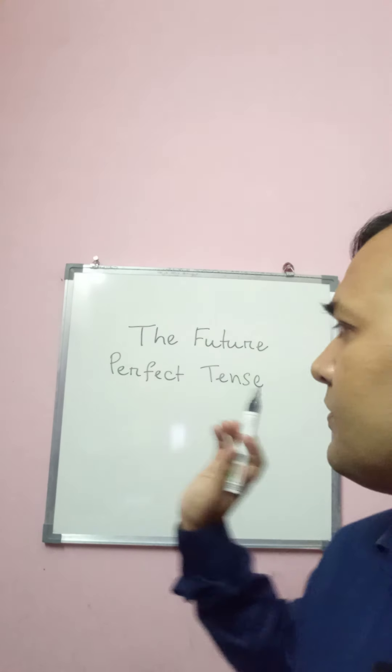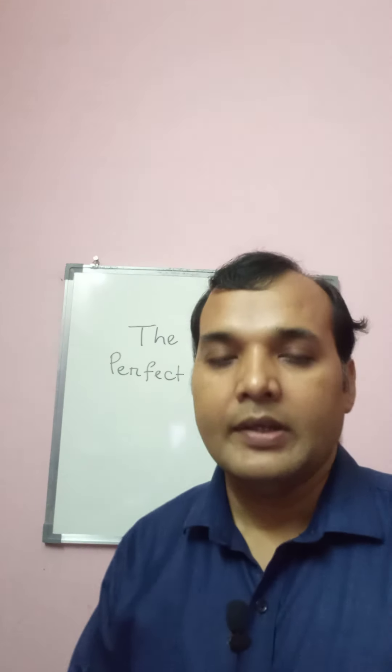Today's topic is future perfect tense. Future perfect tense is used to indicate an action which will be completed at a point in the future — there is a deadline, a stop point, that we find in the future. For example: 'The person will have reached home before it rains.'